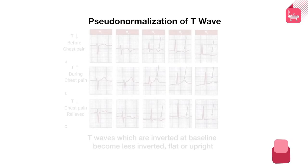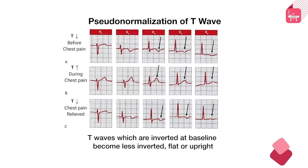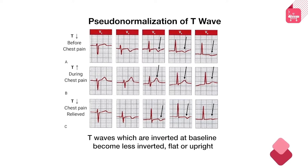The opposite phenomenon can also happen. In someone who has an upright T wave at baseline, T wave inversion conveys ischemia. But paradoxically, in a person whose T wave is already inverted at baseline, the T waves can become normal-looking or upright during an episode of ischemia — called pseudo-normalization. One can recognize this only by comparing with a baseline ECG. Serial assessment by comparing with previously available baseline ECGs is important.